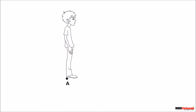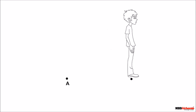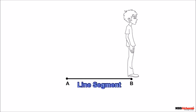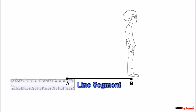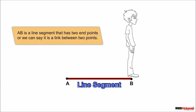Suppose a man is standing at point A. If the man starts walking and stops at an end point, say B, then the distance between these two points is called a line segment, and the length of this line can be measured easily. We can say AB is a line segment that has two end points, or it is a link between two points.